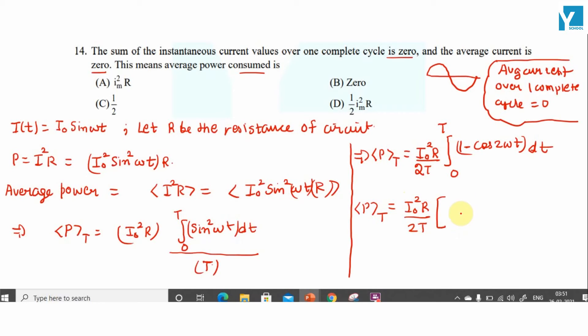divided by T, we will get T, and the integration of sin²(ωt) gives us T minus sin(2ωt) divided by 2ω, evaluated from 0 to T.